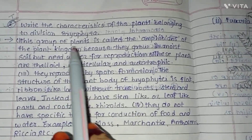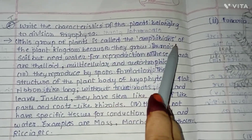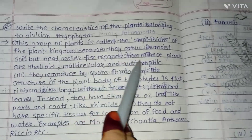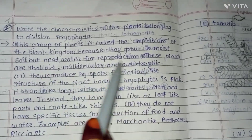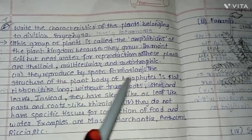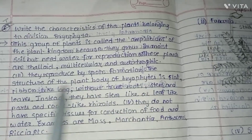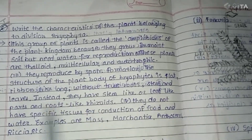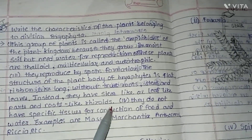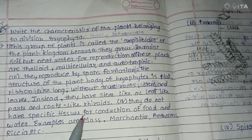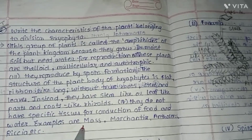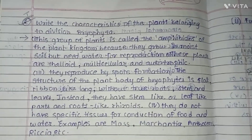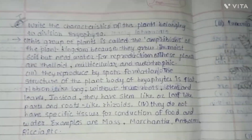Question: write the characteristics of plants belonging to the division Bryophyta. This group of plants is called the amphibians of the plant kingdom because they grow in moist soil but need water for reproduction. These plants are thalloid, multicellular, and autotrophic. They reproduce by spore formation. The plant body of Bryophyta is flat and leaf-like, without true roots, stem, and leaves; instead they have stem-like and leaf-like parts and root-like rhizoids. They do not have specific tissues for conduction of food and water. Examples are moss, Marchantia, Anthoceros, Riccia, etc.